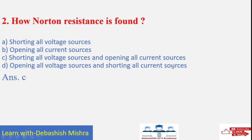Answer C: shorting all voltage sources and opening all current sources. Because as we discussed in Thevenin's theorem, when we are calculating the RTH, we also short all voltage sources and open all current sources. Here also, when calculating Norton resistance, you short all voltage sources and open all current sources. So answer C is correct.